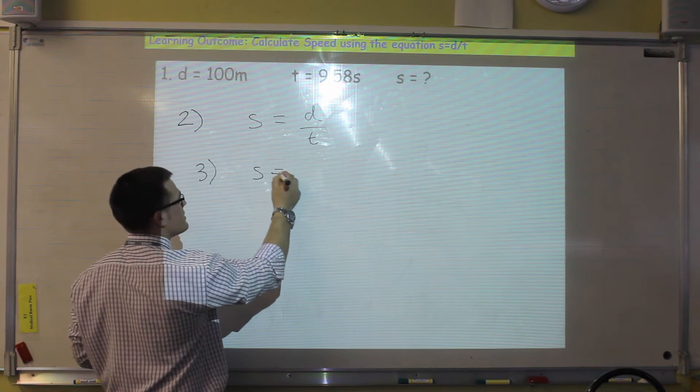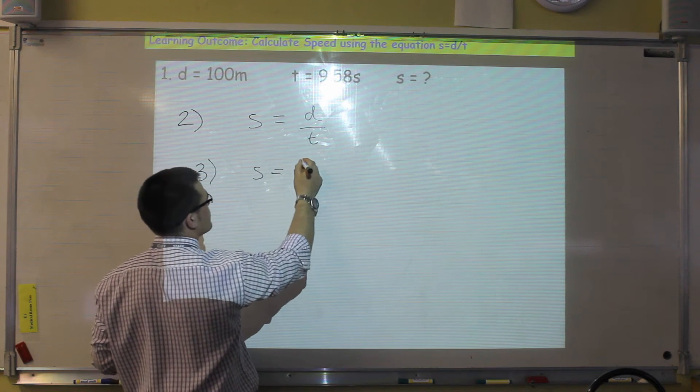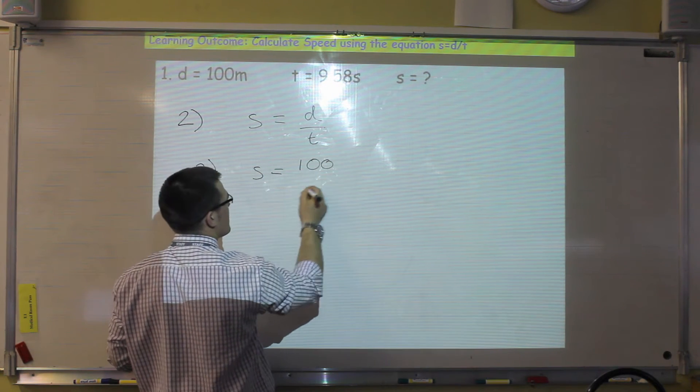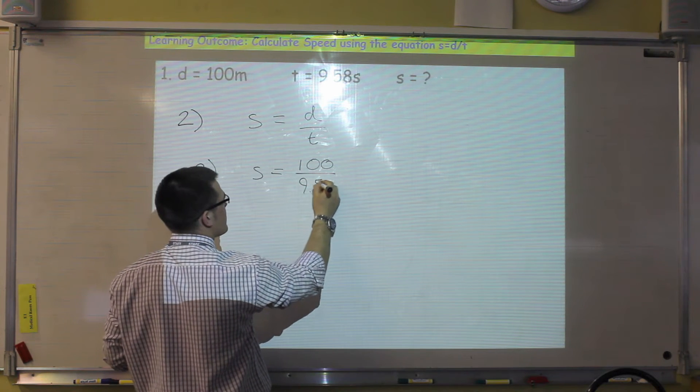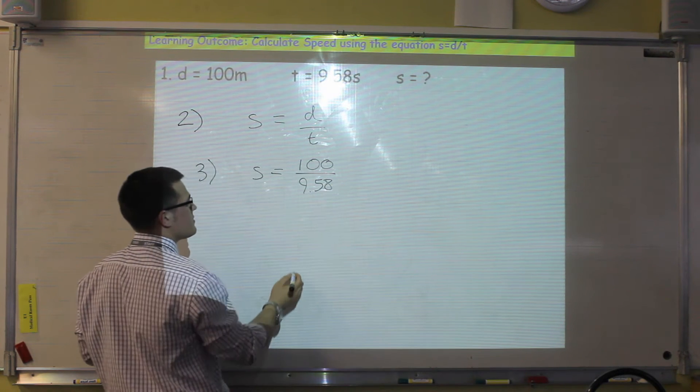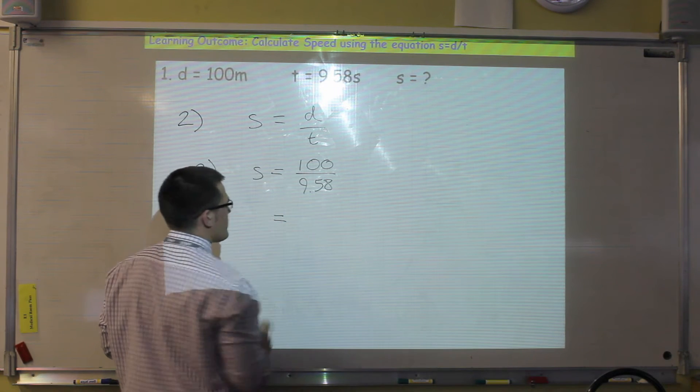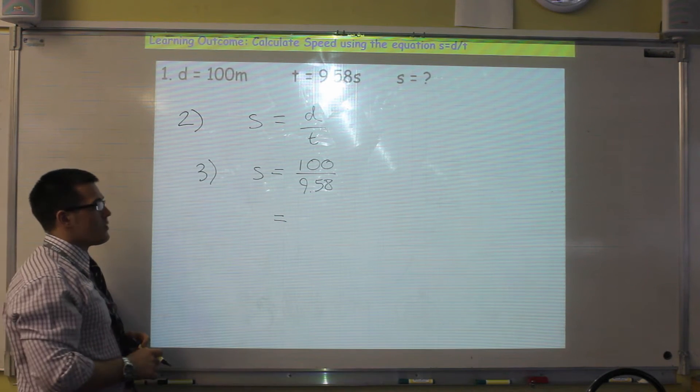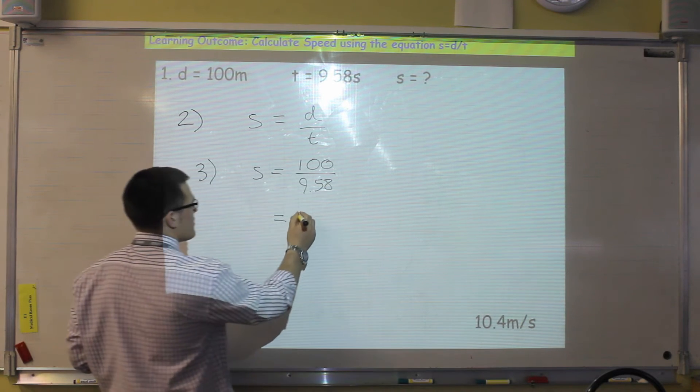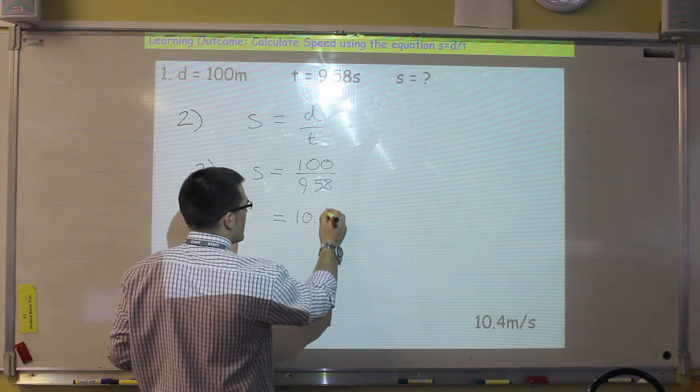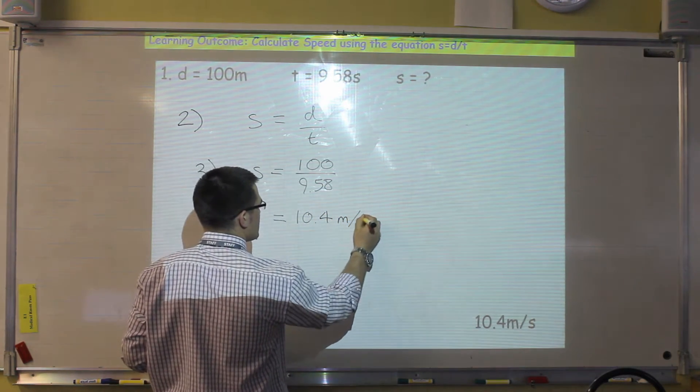Step number three is we put the numbers that we've extracted from the question into our equation. So speed is equal to distance, which is 100 meters, divided by time, which is 9.58 seconds. And the final thing we do is we put it into a calculator and work it out, which will give us a speed of 10.4 meters per second.